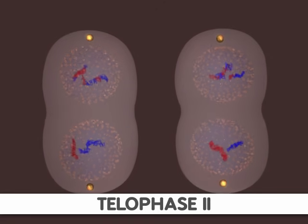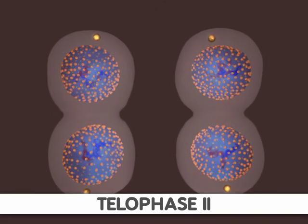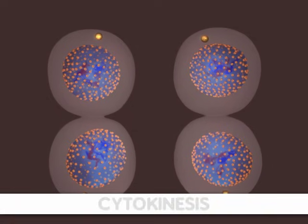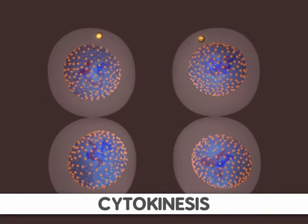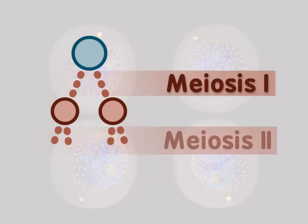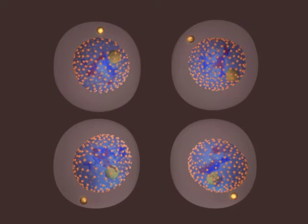In telophase II, the nuclear membrane reforms and the cytoplasm is divided into the two haploid daughter cells. This division is called cytokinesis. Since meiosis II began with two cells, and each of those cells were split into two cells, we now have four unique haploid cells at the end of meiosis.